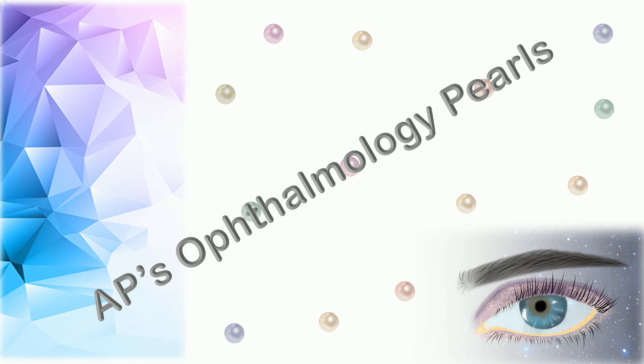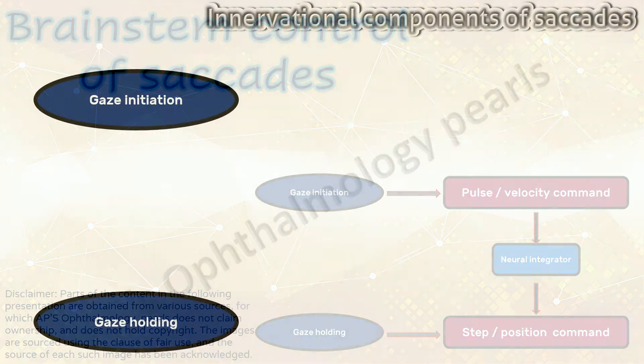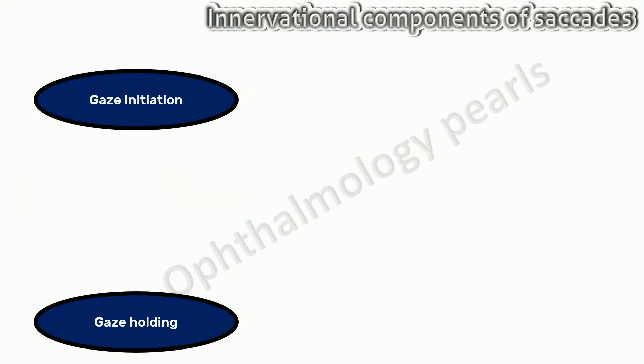Hello viewers, welcome to AP's Ophthalmology Pulse. Today we shall discuss the brainstem control of saccades. The innervational components required for saccades are of two types: phasic and tonic.